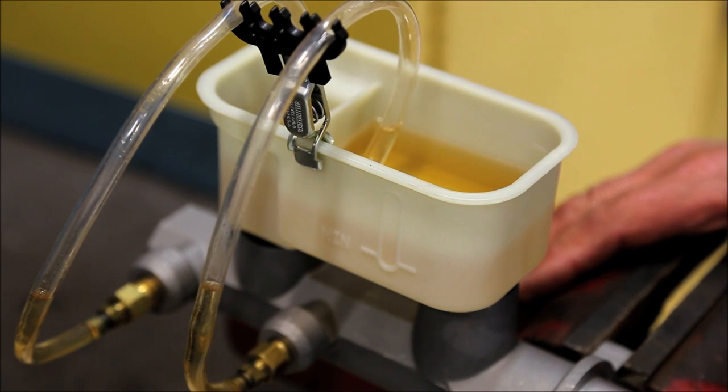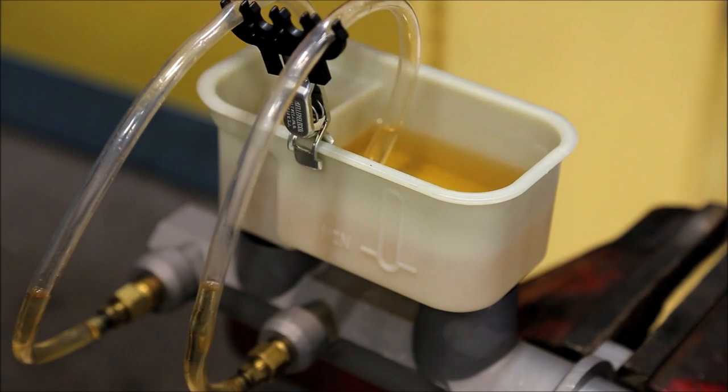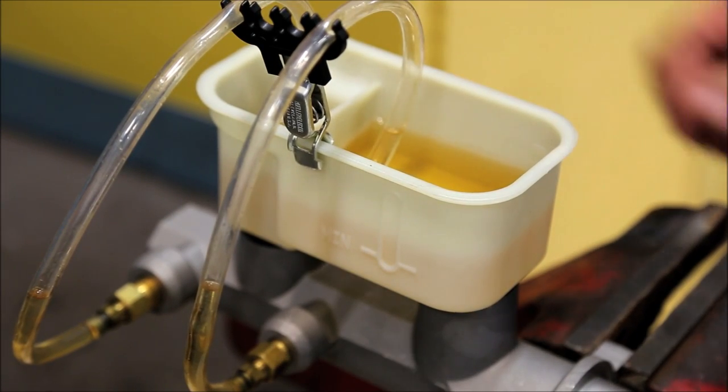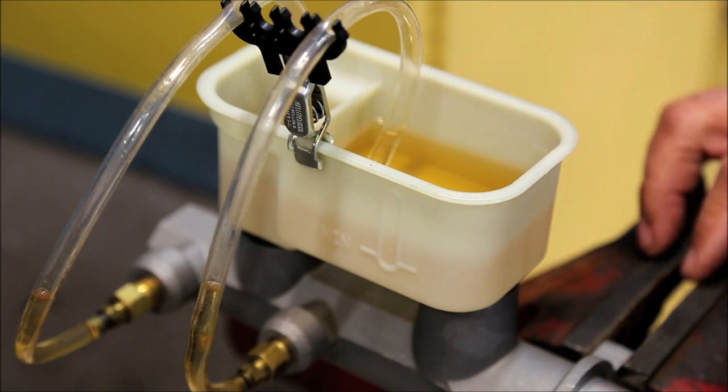The second method of bench bleeding is using recirculation tubes. Fill the master cylinder up, install the tubes, and make sure they're submerged in the brake fluid.